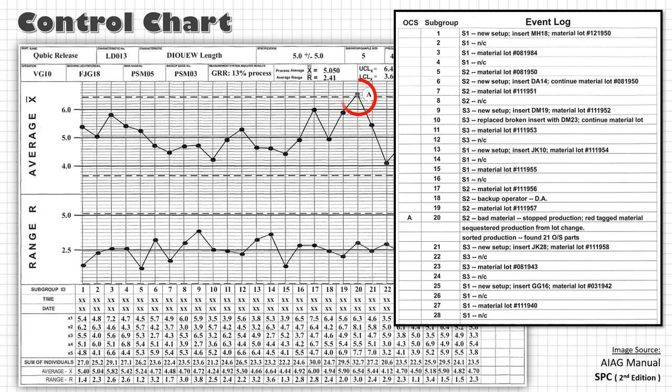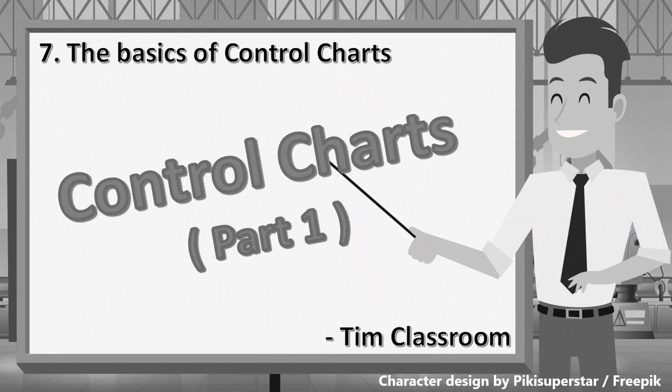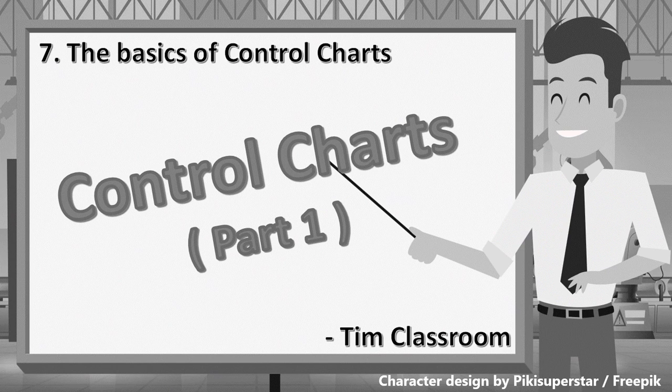So that if any special cause is detected, we can easily relate and identify the source of variation. That's all about the basics of control charts. We will learn how to calculate the control limits in the next lesson. See you there.